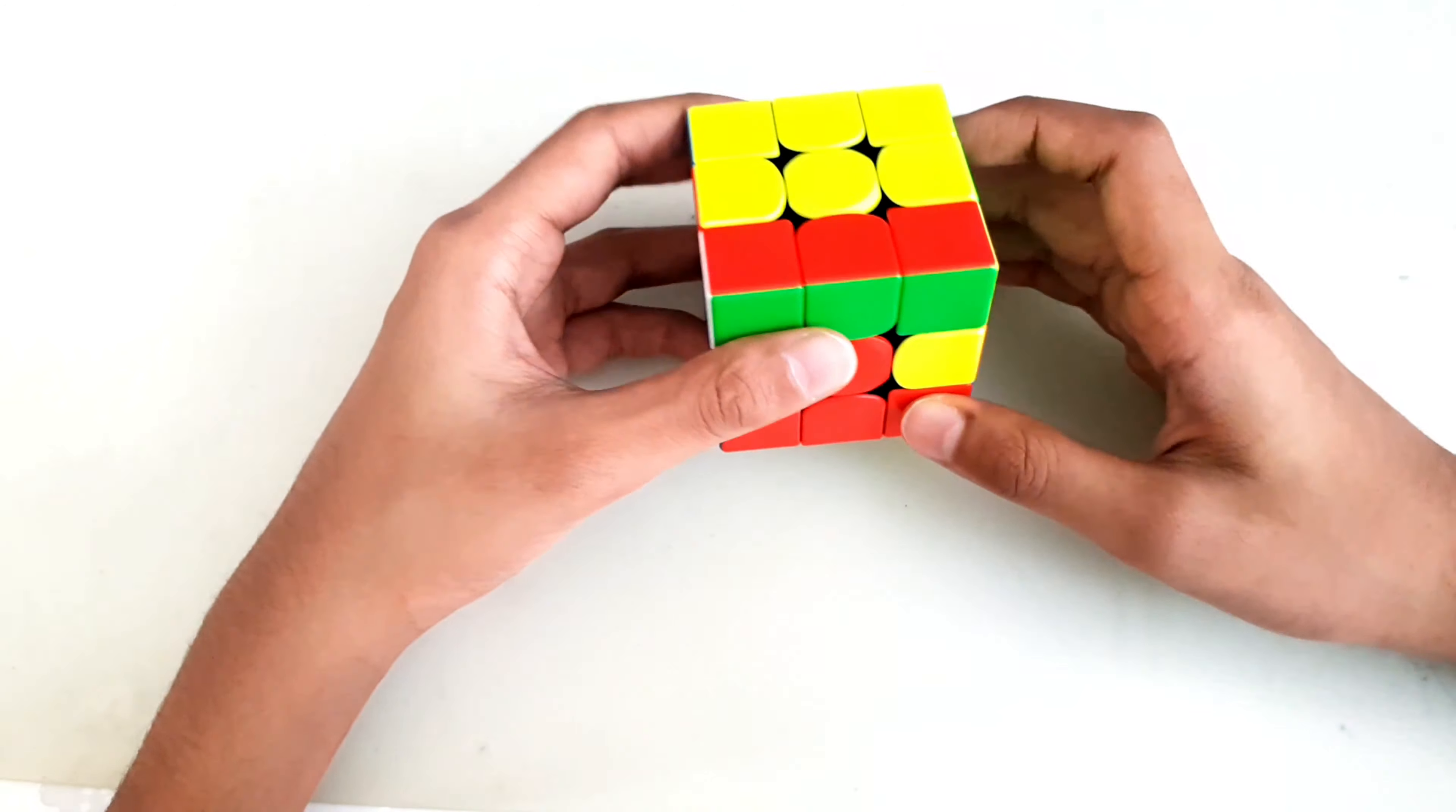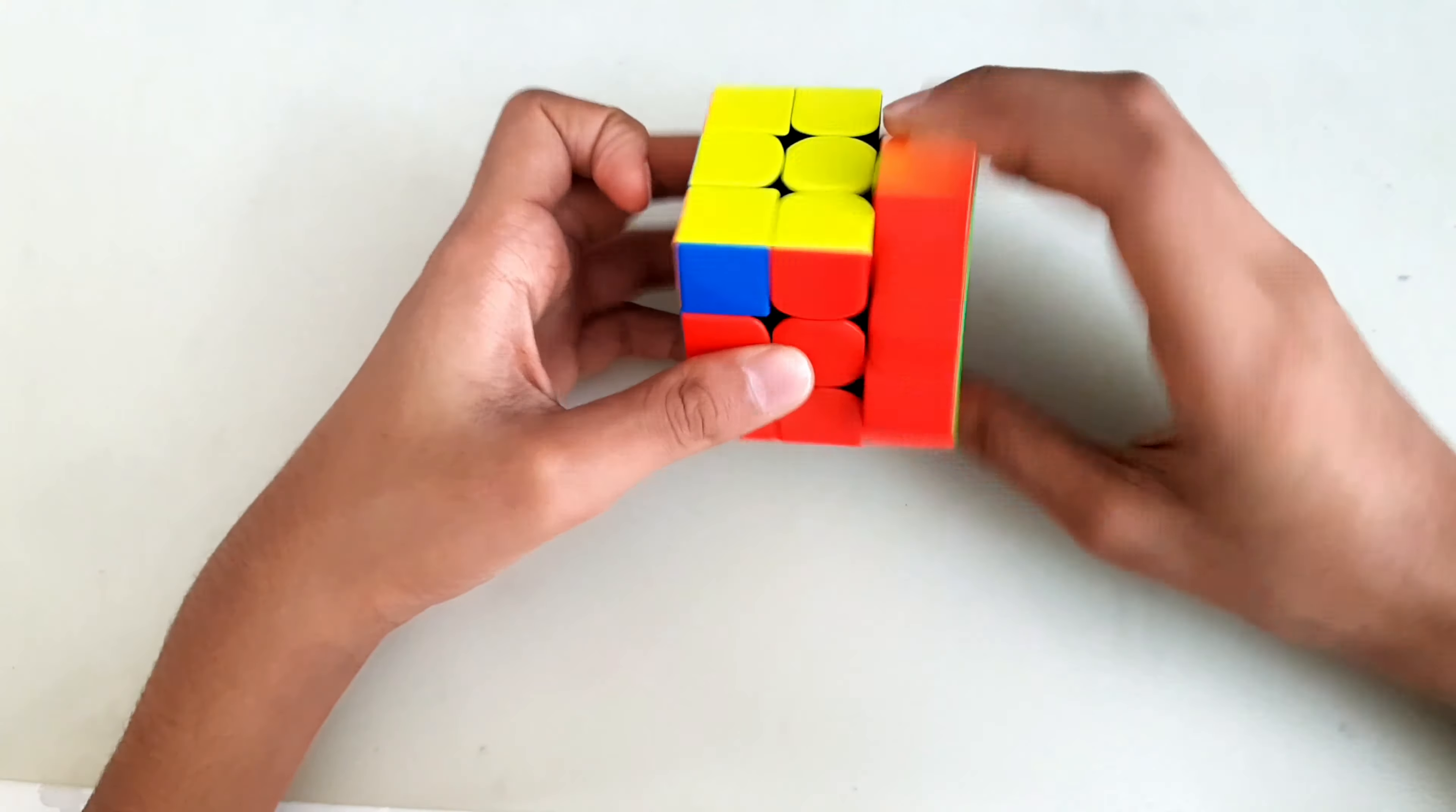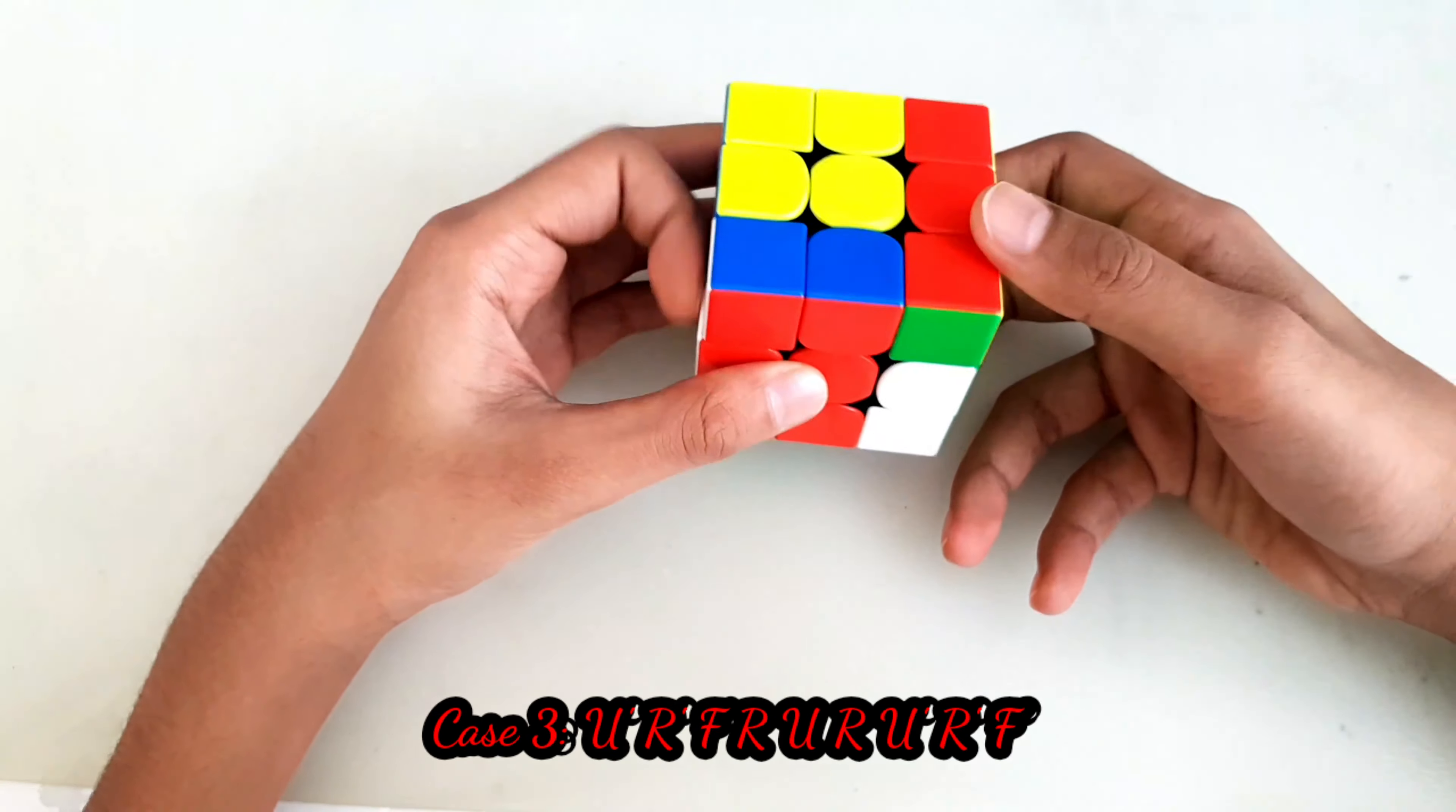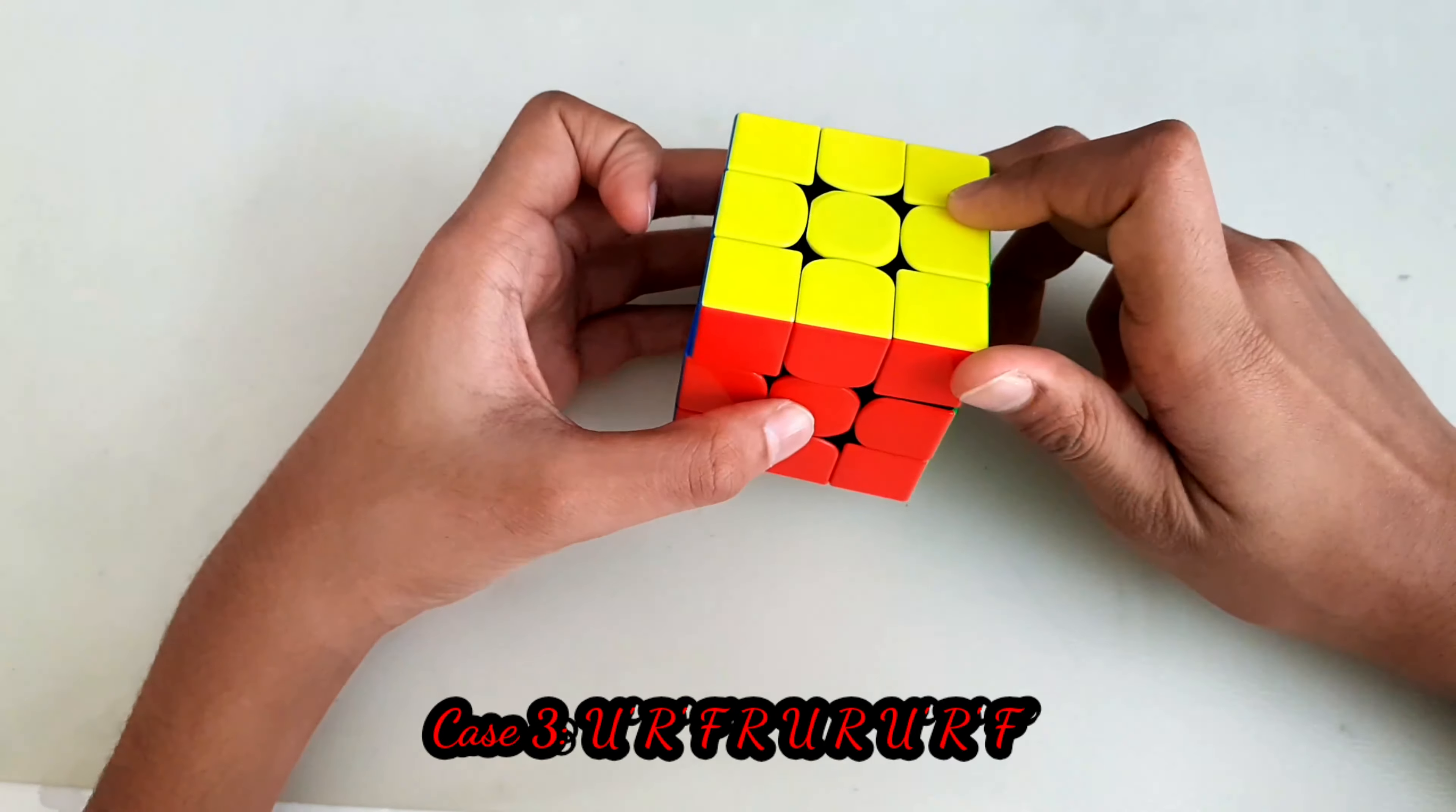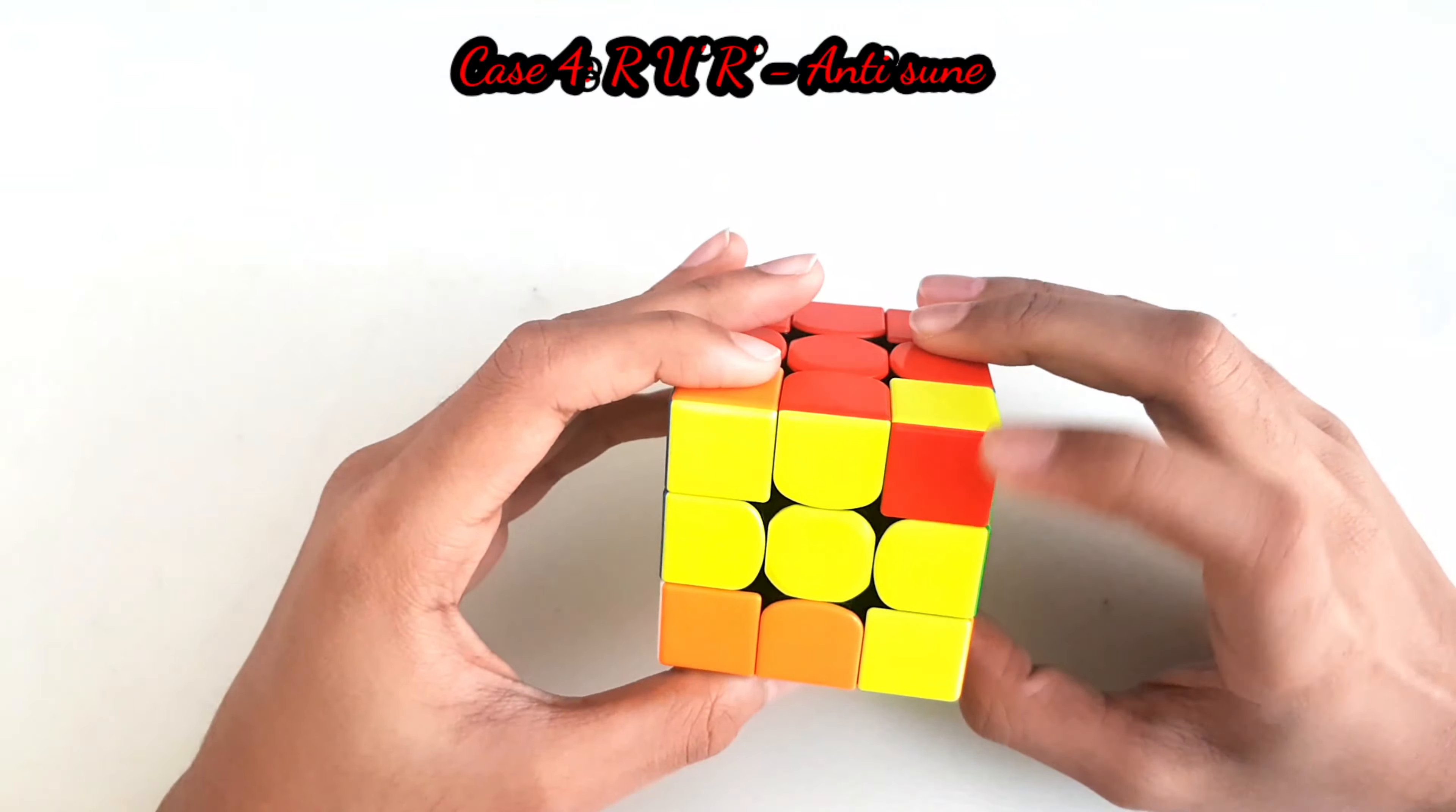The next case is when you have the yellow corner facing towards the back side. You hold it like this and you just do R U' R' and then the anti-Sune.